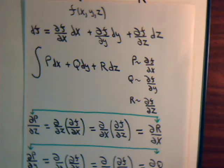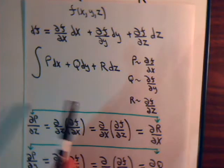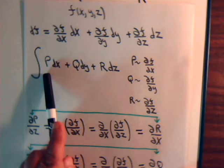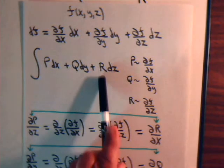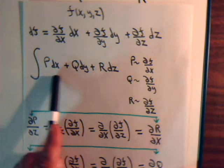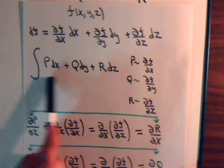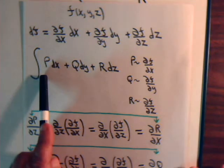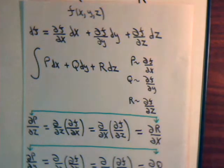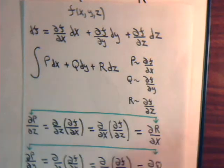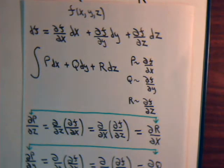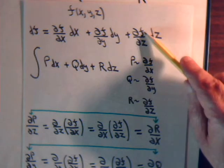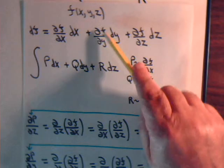Now suppose that we have a line integral — really a space integral — where we have p dx plus q dy plus r dz, where p, q, and r can each be functions of x, y, and z. If this is an exact differential, that means this expression is the differential of some function f. Which means p would be the partial of f with respect to x, q would be the partial of f with respect to y, and r would be the partial of f with respect to z.